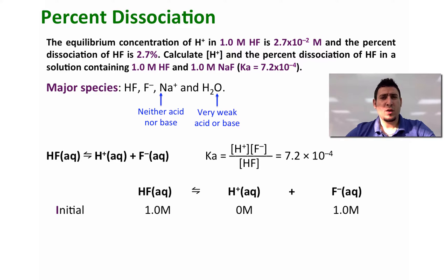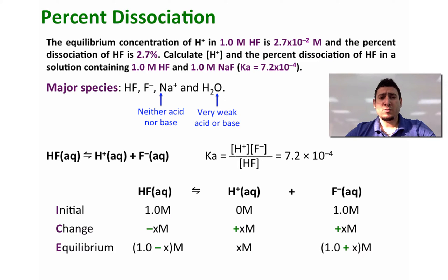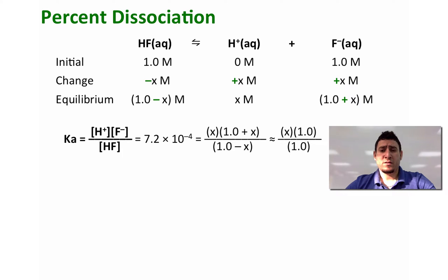We will use an ICE table to determine the equilibrium concentrations of H plus, F minus, and HF. Initially we had 1 molar of HF, 0 molar of H plus before any dissociation, and 1 molar of F minus — this F minus coming from the complete dissociation of sodium fluoride. After the change, some HF will dissociate to give H plus and F minus. At equilibrium: concentration of HF equals 1 minus x, H plus equals x, and F minus equals 1 plus x. We can ignore x because it is too small compared to 1 molar, simplifying the expression.